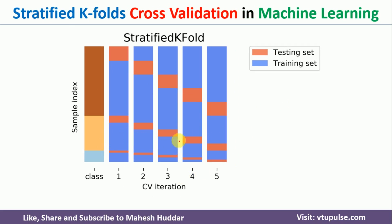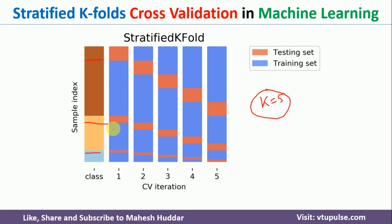In stratified k-fold cross-validation, rather than simply dividing the data into 5 folds, we divide it such that each fold has equal representation of each class. If you look at the first iteration, the testing fold — shown in red — has equal representation of each and every class. The same happens in the second, third iteration, and so on. This way, in each iteration we get equal representation from every class, so there will be no bias and the model will not go into an overfitting state.